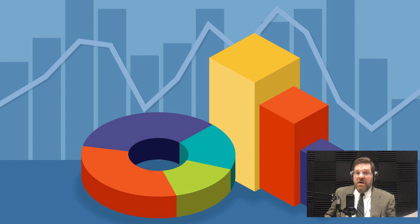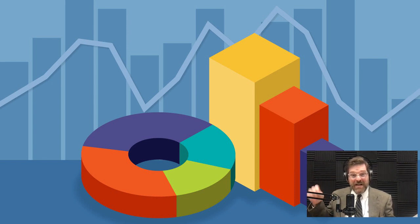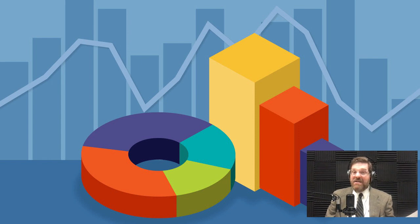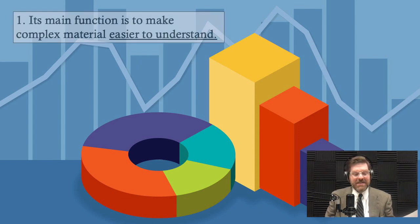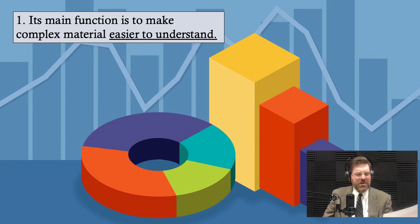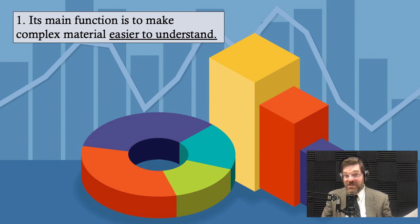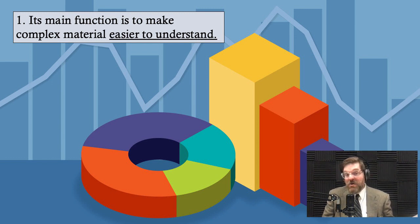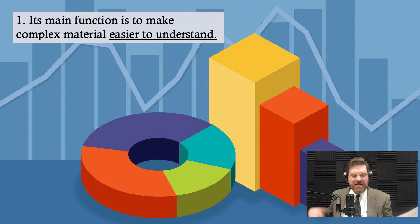I want to talk here first about one type of visual aesthetics — that of a graphic aesthetic. The main function of graphic aesthetic is to make complex material more tangible, more easily understood. Things like drawings, bullet points, charts, or subheadings would count as graphical aesthetic approaches.